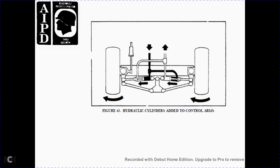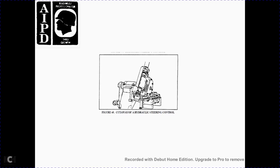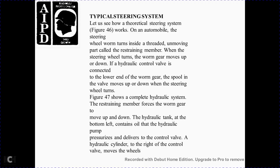Figure 43 shows the hydraulic cylinders added to the control arms. Figure 44 shows the hydraulic steering system. Figure 45 shows a cutaway of the hydraulic steering system.